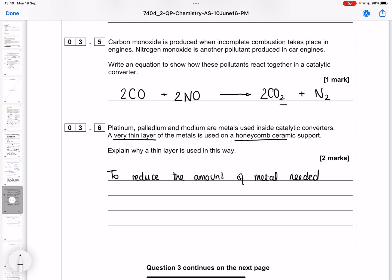Why a honeycomb support? We're using some sort of ceramic in a very intricate shape and applying a very thin layer of metal across that shape. Why would we use this honeycomb shape? The honeycomb provides a large surface area. The honeycomb provides large surface area for reactions to occur on.